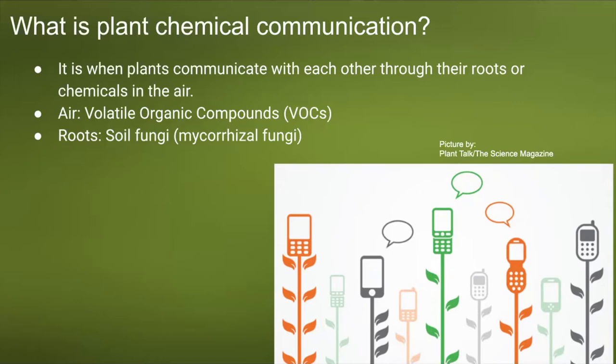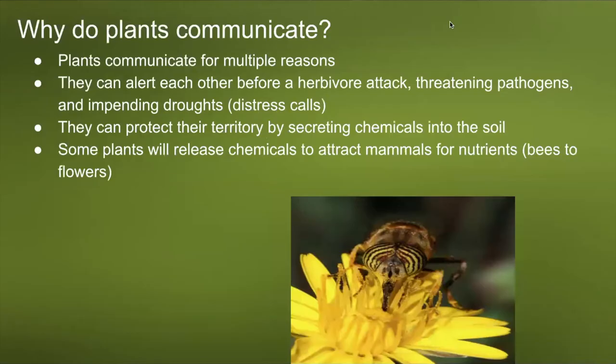I added a picture from Plant Talk Science Magazine that demonstrates what goes on in modern terms. Why do plants communicate? Plants communicate for multiple reasons. They can alert each other before herbivore attack, threatening pathogens — which are bacteria — and also impending droughts. Distress calls are one of the main reasons plants communicate because they want to protect their kin.